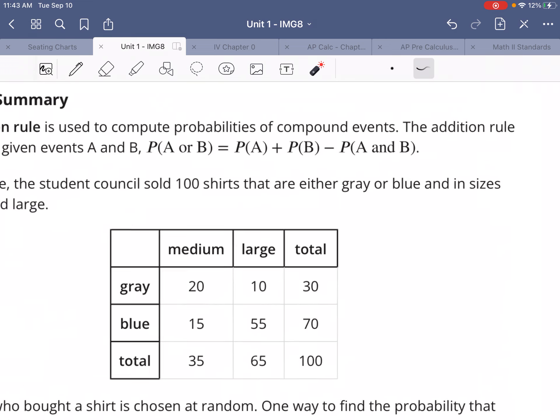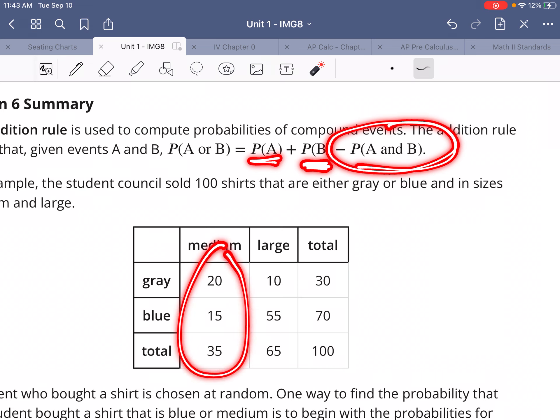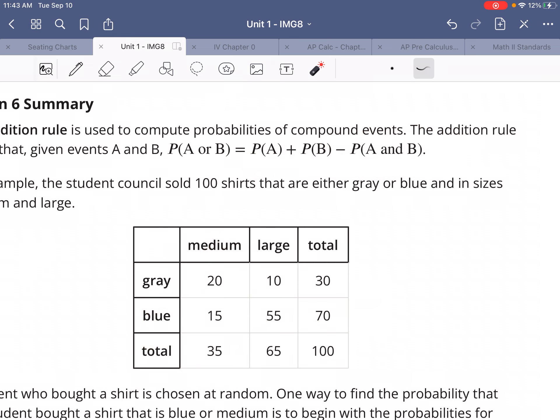So that's why we take the probability of the first thing, add the probability of the second thing, and then take away the probability of both of them. We can add these all together, and we can add all these together. This got double counted, so we're going to take one of them away.